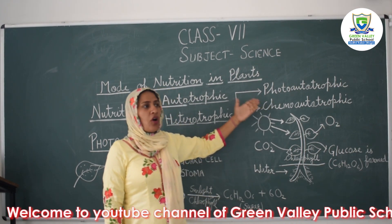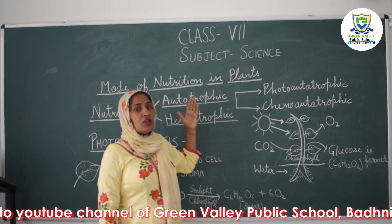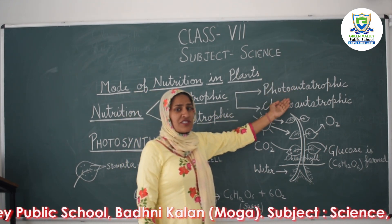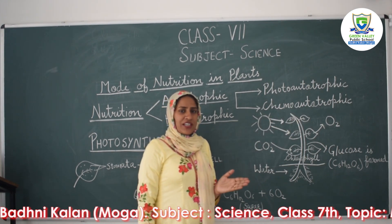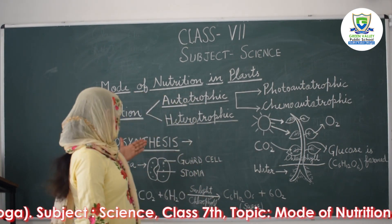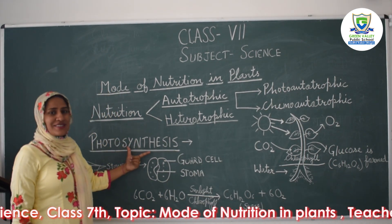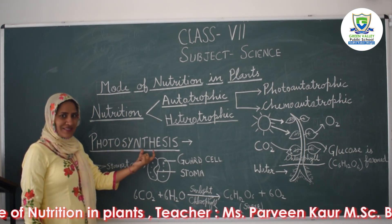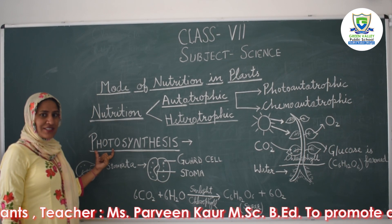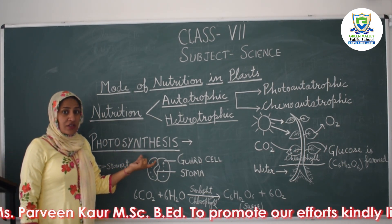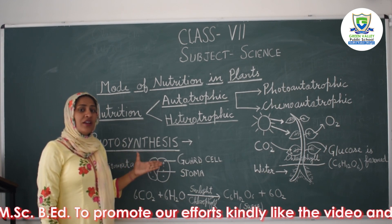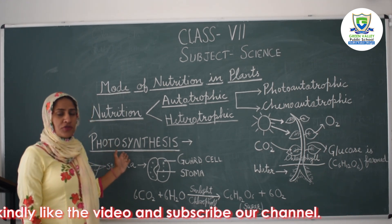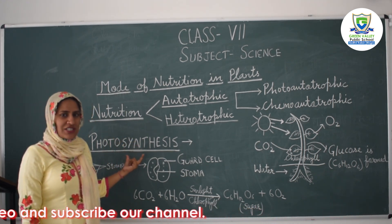So those are the two types of autotrophic nutrition. Now let's talk about photo autotrophic nutrition, in which green plants make their food by using sunlight energy — this is photosynthesis. 'Photo' means sunlight and 'synthesis' means putting together. Photosynthesis is the process by which green plants make their food by using certain raw materials.